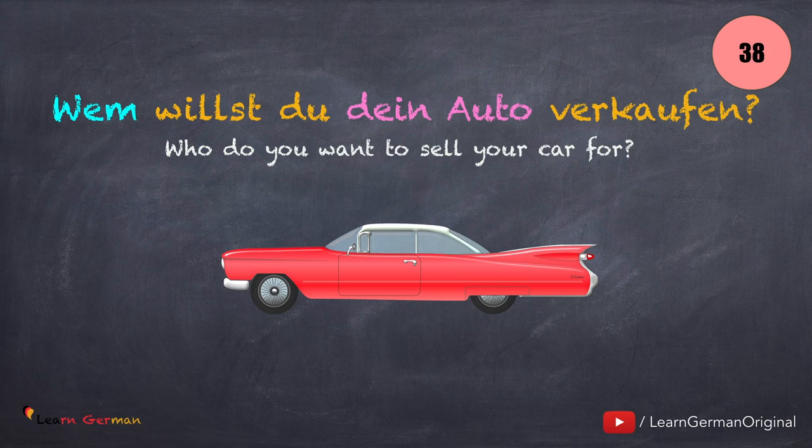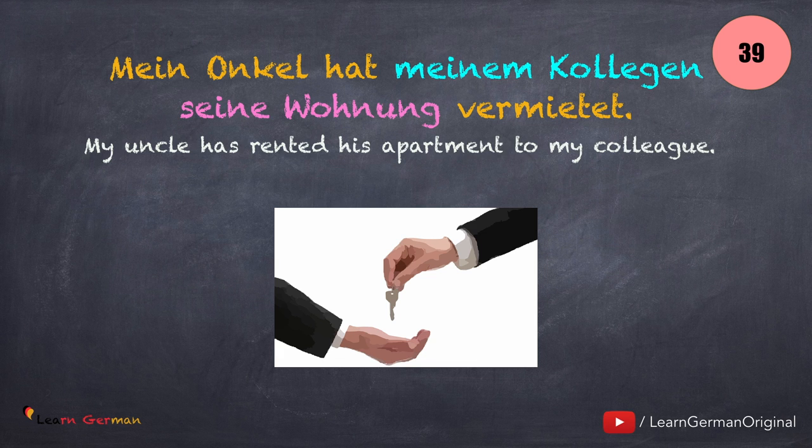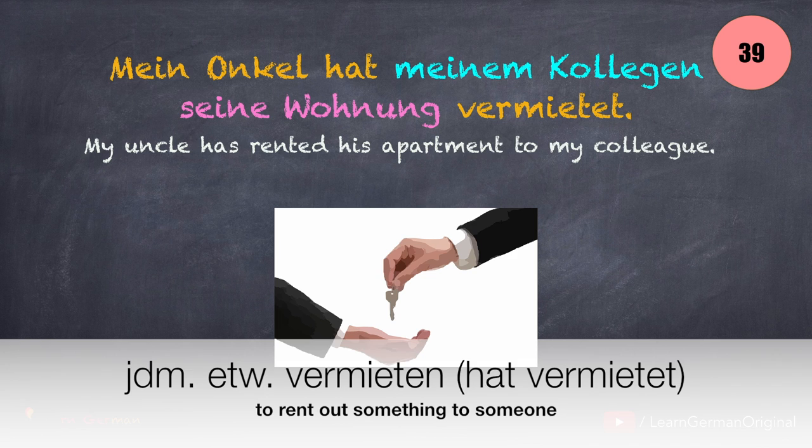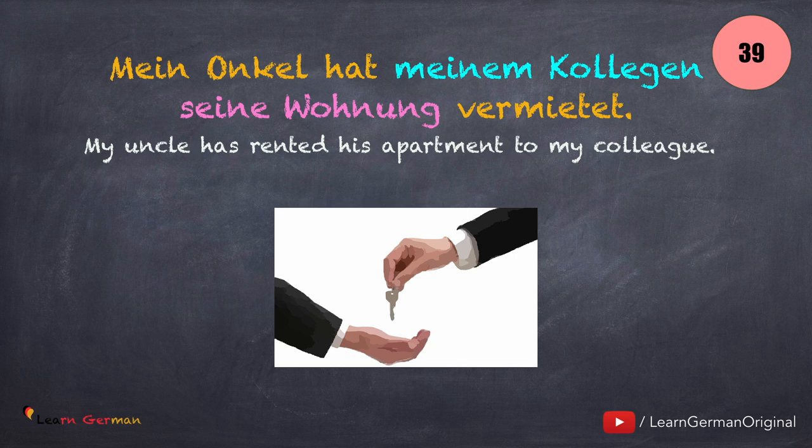And here is the next verb: Mein Onkel hat meinem Kollegen seine Wohnung vermietet. Jemandem etwas vermieten. Vermietet here is the Partizip-Perfekt form.